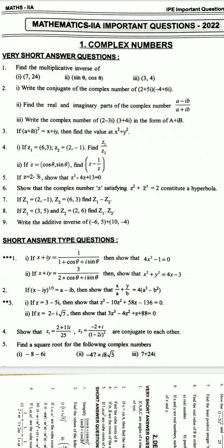Find the square root of the following complex numbers: minus 6 minus 6i, minus 47 plus i8 root 3, 7 plus 24i.